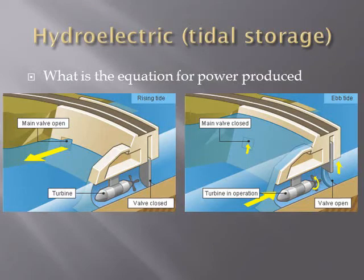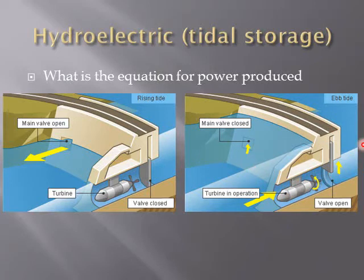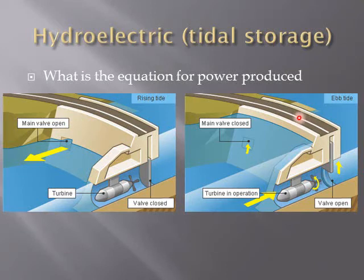Another way to get hydroelectric energy is tidal storage. Where there's a bay with a narrow opening, they put up a dam and a valve. As the tide comes in they open the valve and let the water get really high. During high tide they close the valve, then wait for low tide. Once it's low tide on one side but still high on the bay side, they open the gate and get energy from that change in gravitational energy. With a bidirectional turbine they can extract energy multiple times a day, though it's not very consistent.